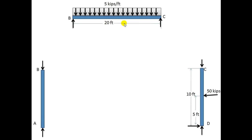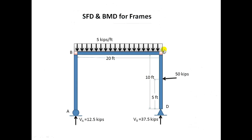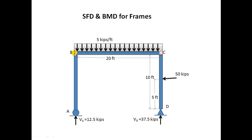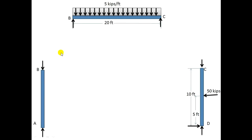If B and C are pin supports, no moment will be transferred at those joints. We will draw the SFD and BMD for each segment as a simply supported beam and then join them. Since B and C are fixed points in this problem, moments will be transferred from B to B and C to C, which I will explain in this video.